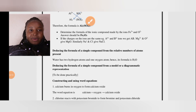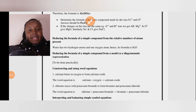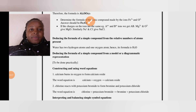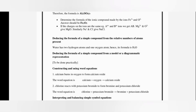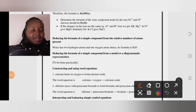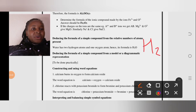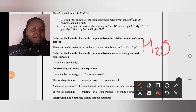Now let's move on to deducing the formula of a simple compound from the relative numbers of atoms present. For example, water has two hydrogen atoms and one oxygen atom. From that information we get H₂O — that's the formula.